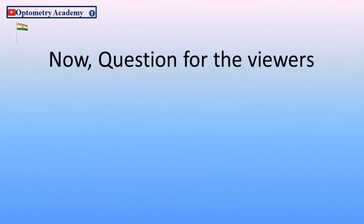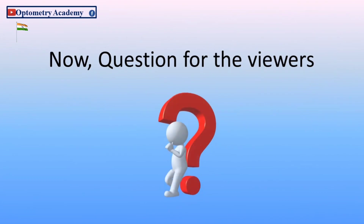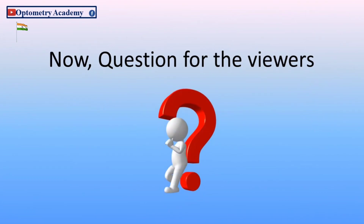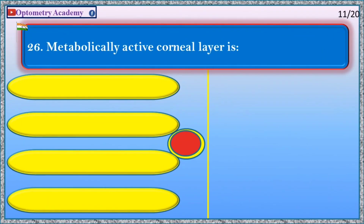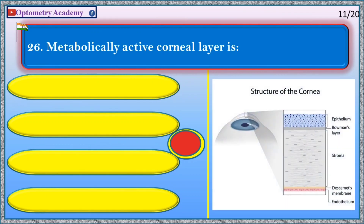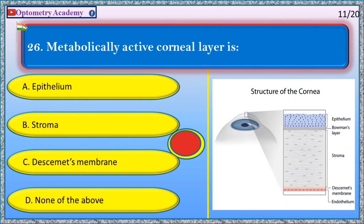Now, question for the viewer — Metabolically active corneal layer is: A. Epithelium, B. Stroma, C. Descemet's membrane, D. None of the above. Kindly comment your answer in the comment box.